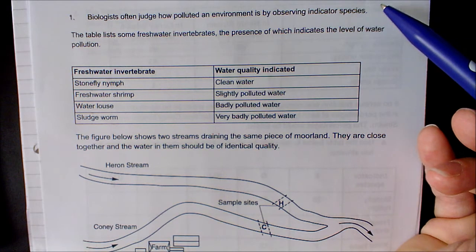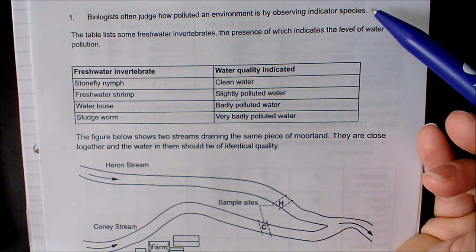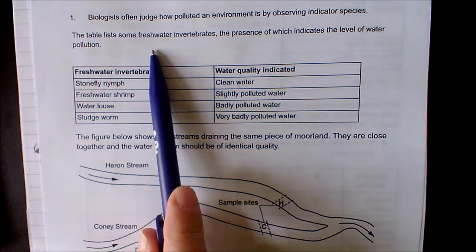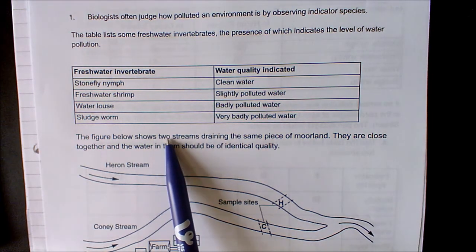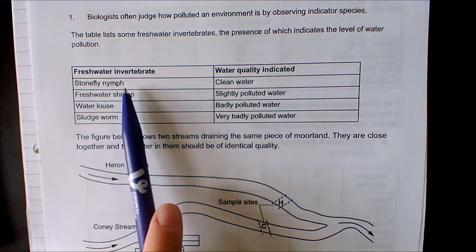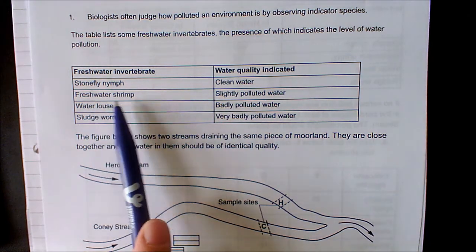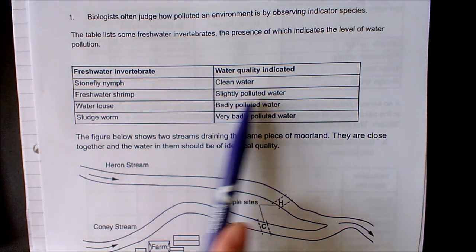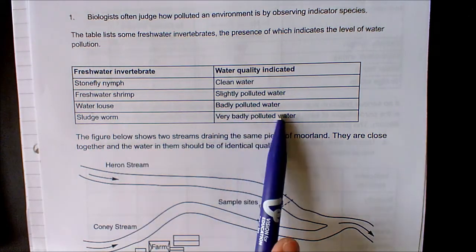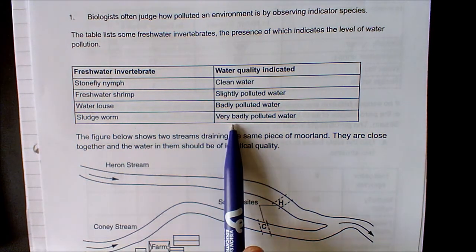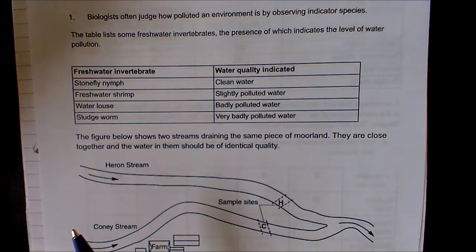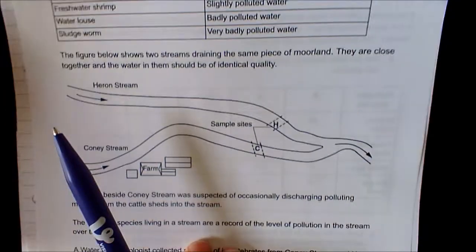So the table lists some freshwater invertebrates, the presence of which indicates the level of water pollution. We've got stonefly nymphs that like clean water, freshwater shrimps in slightly polluted water, water louse in badly polluted, and then sludge worms in very badly polluted. The figure shows two streams draining the same piece of moorland.